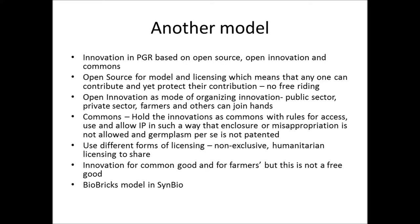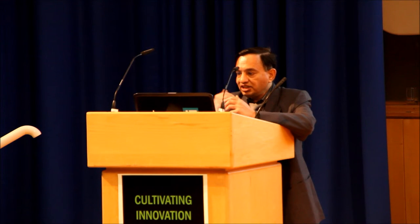But there could be another model where innovation could be based on open source, open innovation, and commons. We can use the open source model for innovation and licensing, which means that one can contribute and yet protect the contribution — no free-riding. Open innovation can be a good model for organizing innovation, which means that public sector, private sector, farmers, and others can join hands. Commons can hold this innovation with rules for access and use, allowing IP in such a way that enclosure or misappropriation is not allowed and germplasm is not patented.